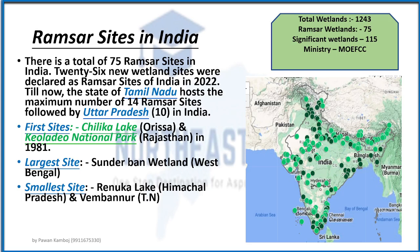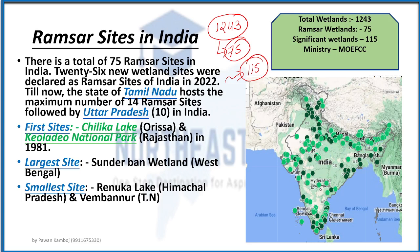Talking about India, the total number of wetlands in India is 1,243 — this is the official government figure. Out of these, 75 are Ramsar wetlands. The government also recognizes 115 significant wetlands, maintained by the Ministry of Environment, Forest and Climate Change. The state with the most Ramsar sites is Tamil Nadu, with 14 sites.